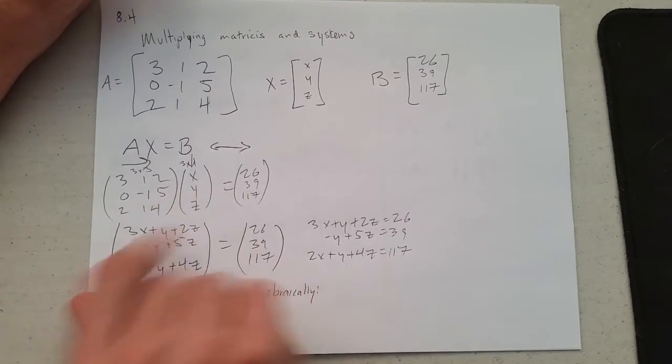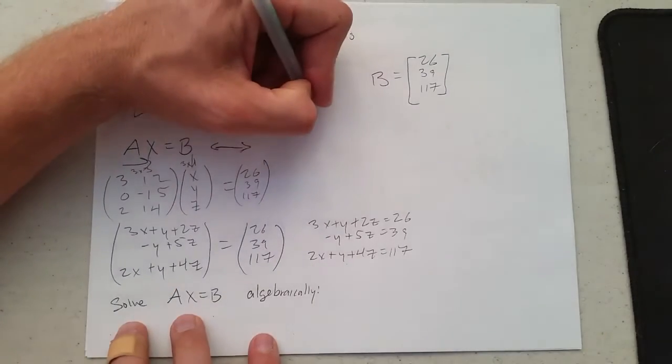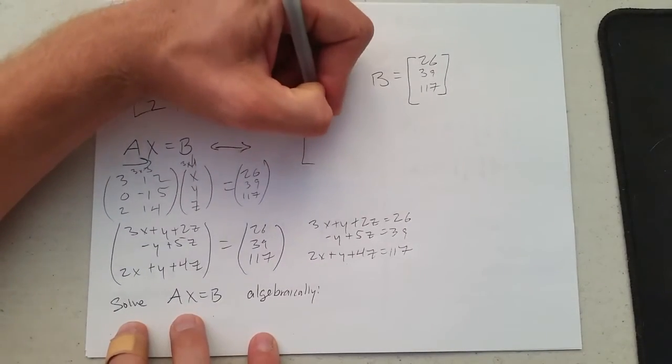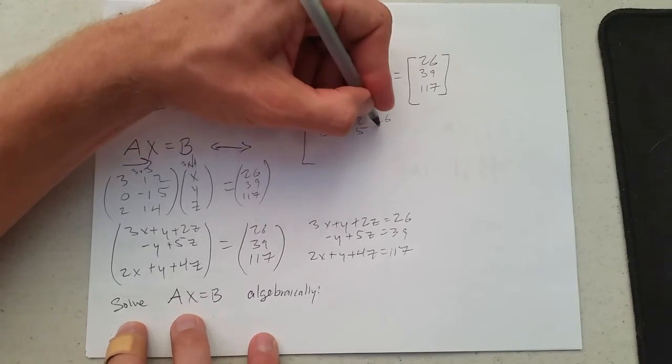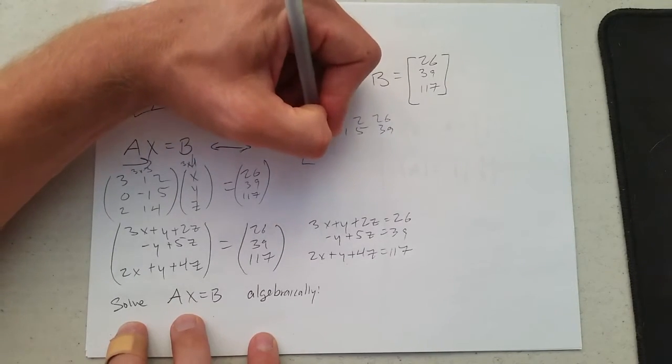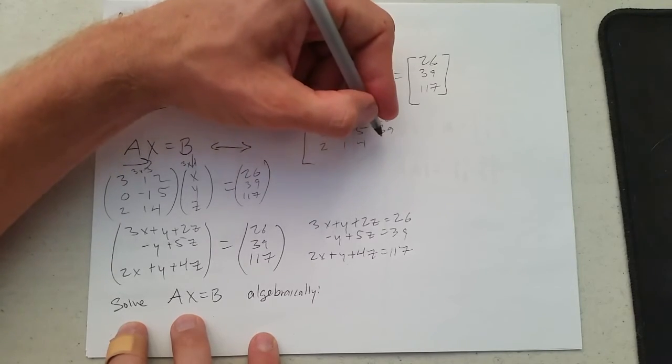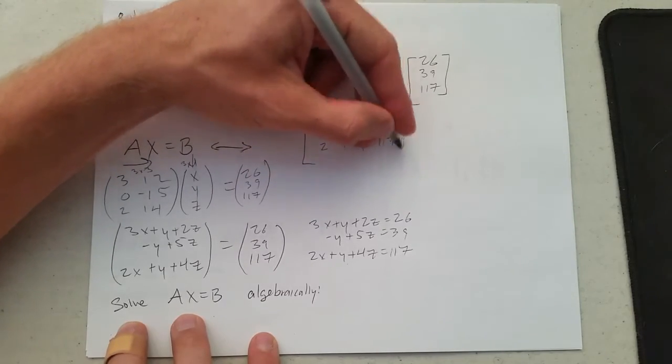Just picking out coefficients here, our coefficient matrix would be 3, 1, 2, 26, 0, negative 1, 5, 39, and 2, 1, 4, 117.